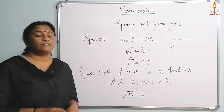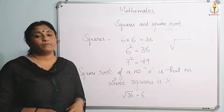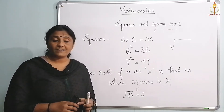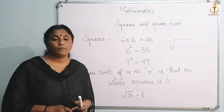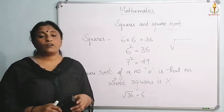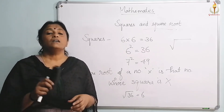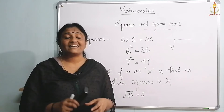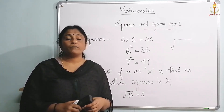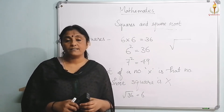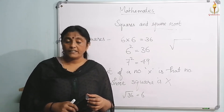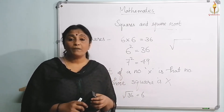The square root of a number can be found using two methods: the prime factor method and the division method. Before moving on to these methods, you need to know about a term called perfect square. A perfect square is a number whose exact square root can be obtained.